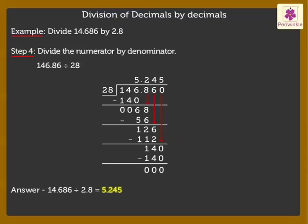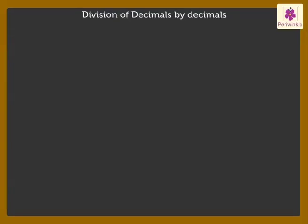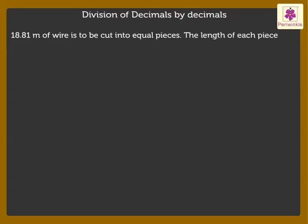Why not solve a story problem? 18.81 meters of wire is to be cut into equal pieces. The length of each piece is 0.11 meters. How many pieces do we get?